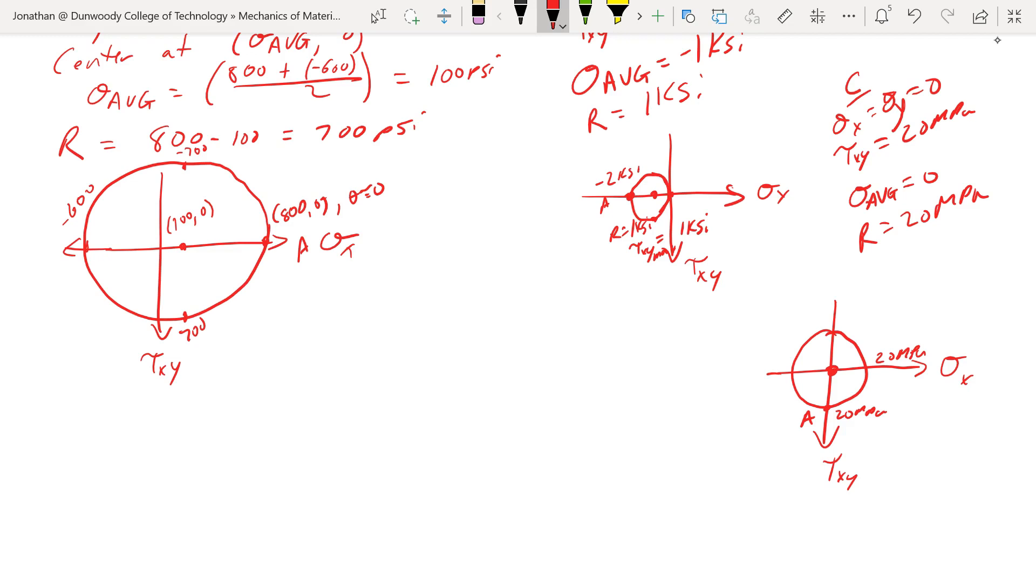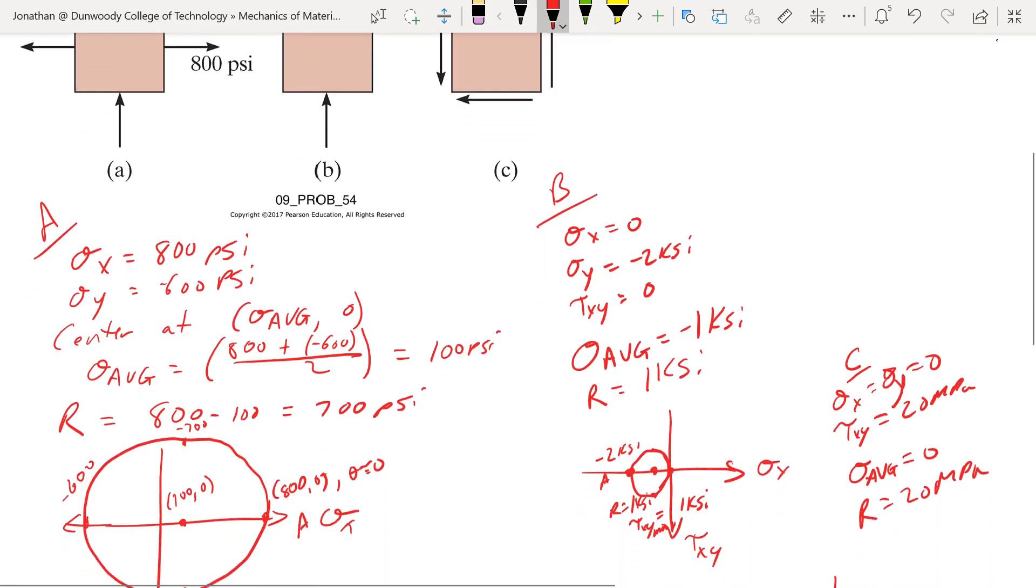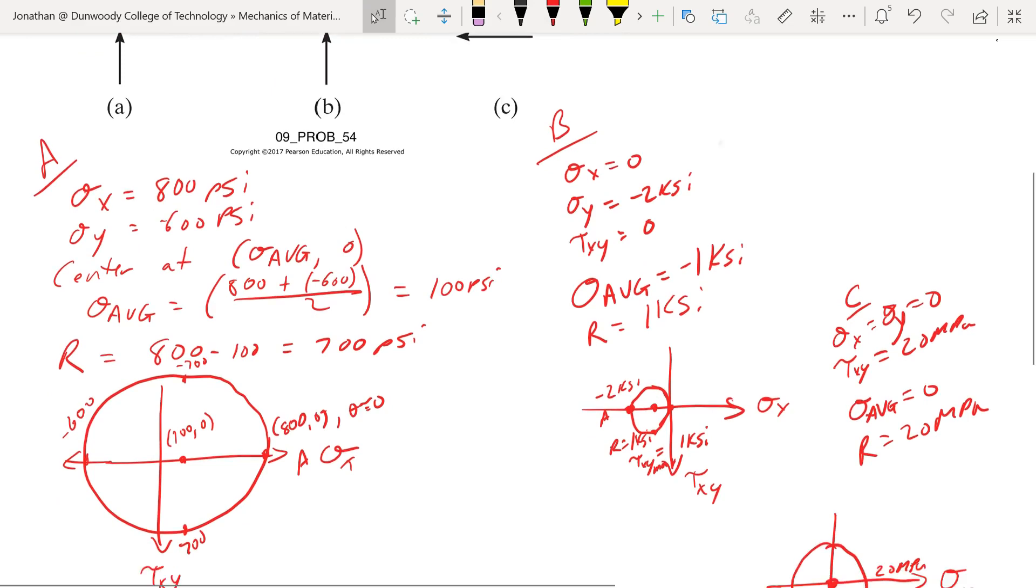So again, these weren't super complicated ones. It was nice that we had only one type of stress. We didn't have shear and normal stress. If we had both, it would be a little more complicated, but it gives you an idea of how we can form Mohr's circle for these types of problems.